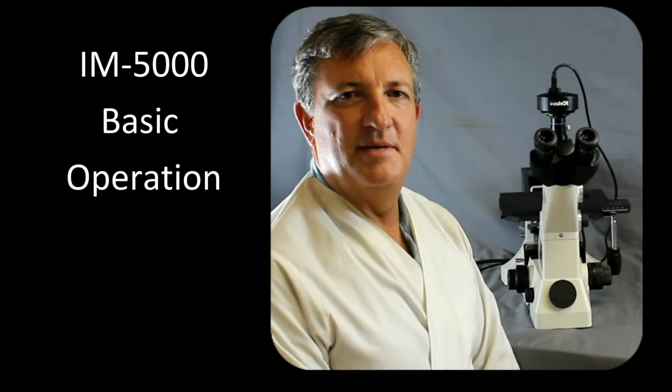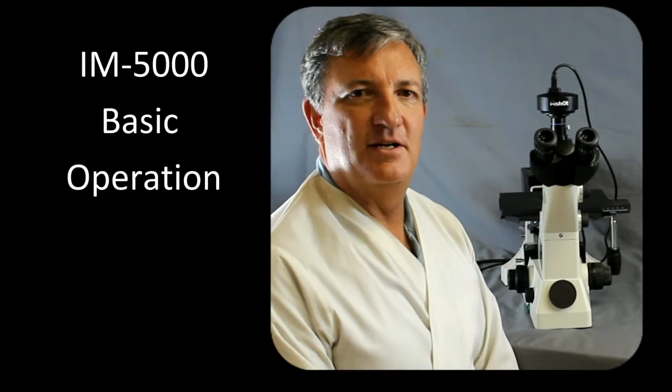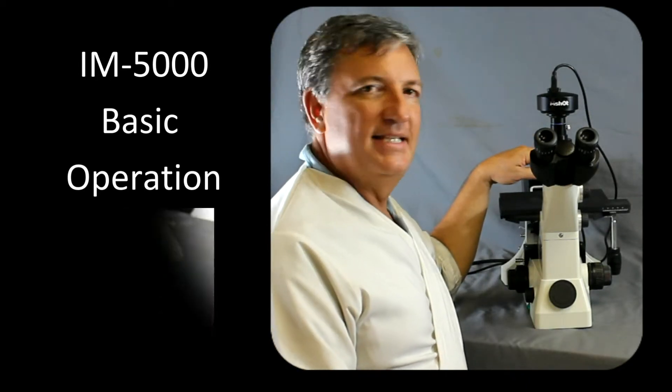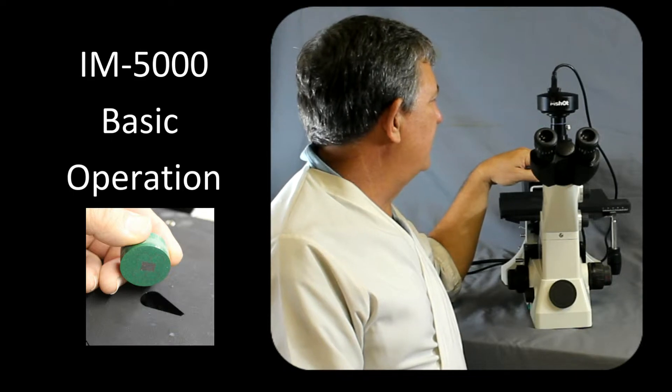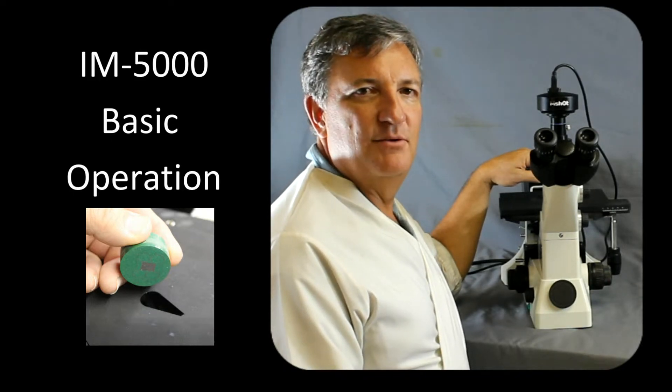The IM5000 metallurgical microscope is an inverted microscope. That means a specimen is facing down towards the objective lens. It doesn't require any planarization of the sample to be in line with the optics.